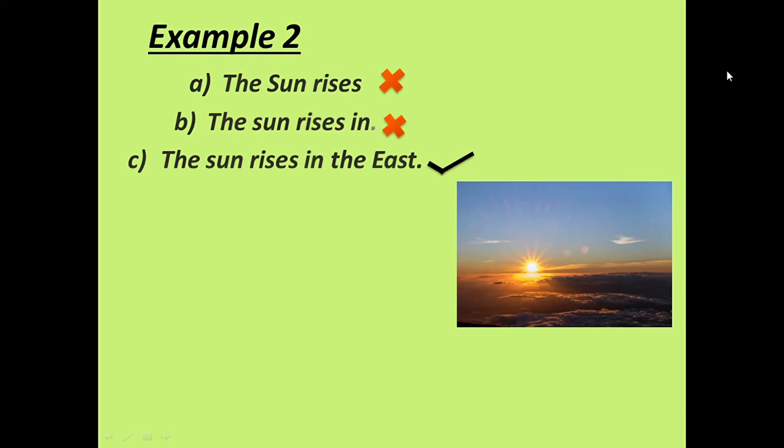In B, the sun rises in groups of words are there. But, it does not make complete sense. So, I have put cross mark also here. In C, the sun rises in the east.